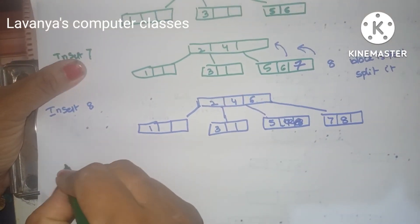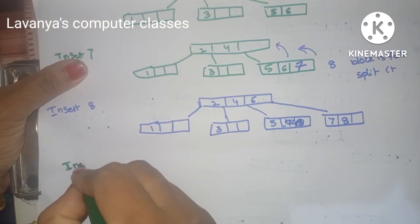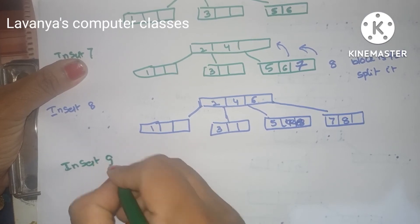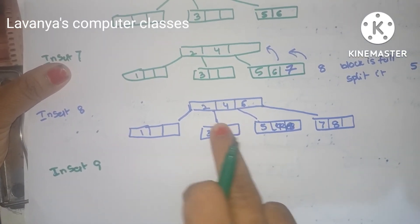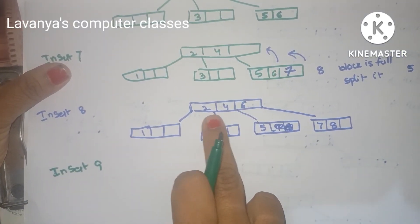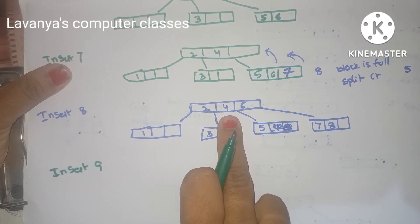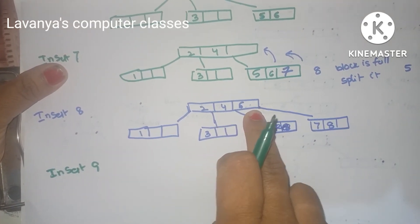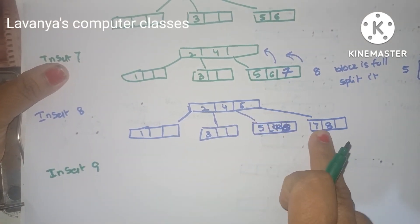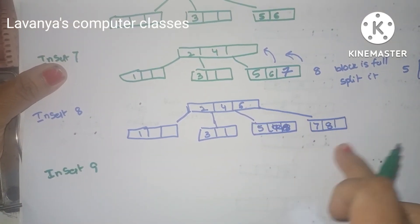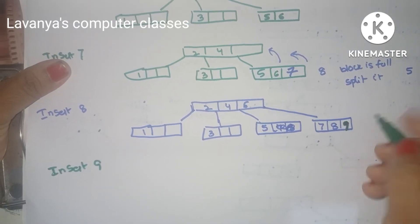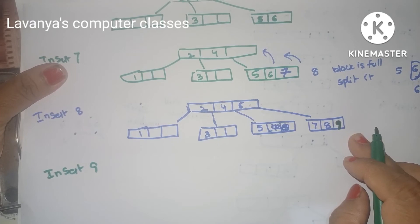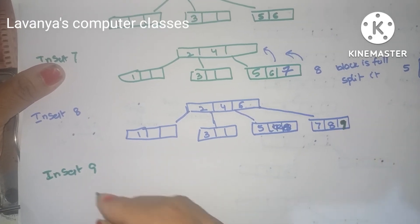Insert 9. It is greater than 2, go right. Greater than 4, go right. Greater than 6, go right. There is space in the rightmost node with 7 and 8. Without any problem, insert 9 there.